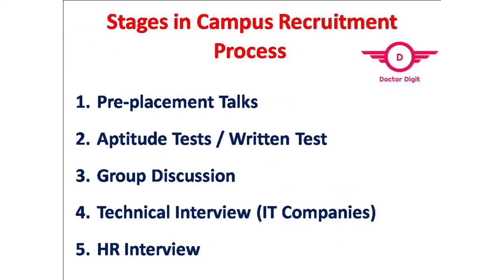The various stages in a campus recruitment process are: first, pre-placement talk; second, they will assess the candidate through aptitude test or written test; third is group discussion; fourth is technical interview for IT companies; and fifth is the HR interview. These are the areas where a company will assess candidates when they come.